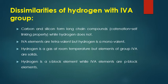Third dissimilarity: hydrogen is a gas at room temperature, whereas Group 4A elements like carbon and silicon are solid. Fourth: hydrogen belongs to the S-block, whereas Group 4A elements belong to the P-block.